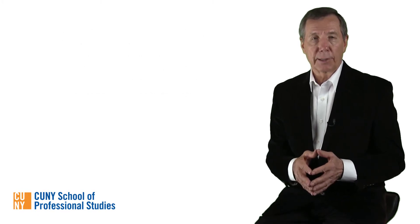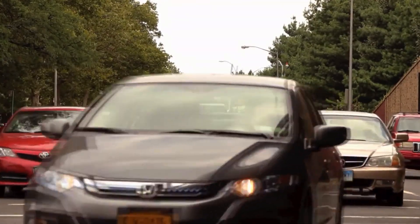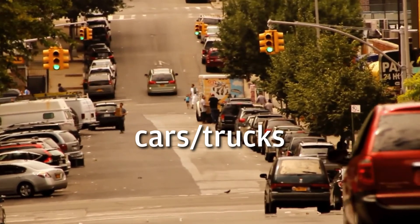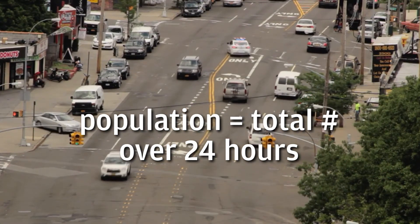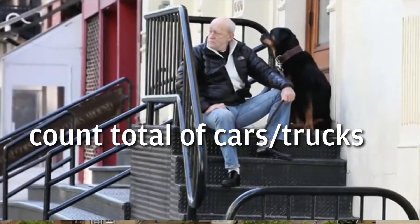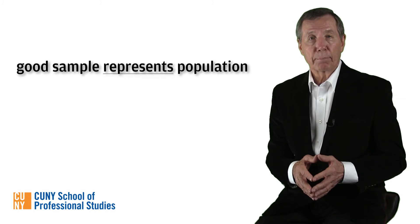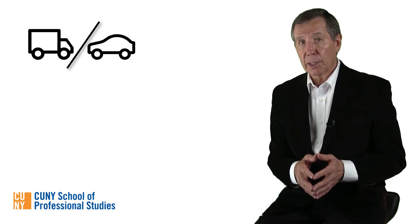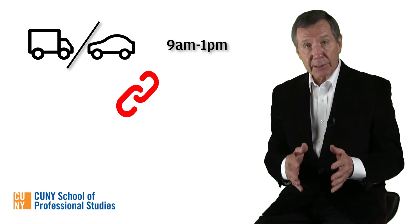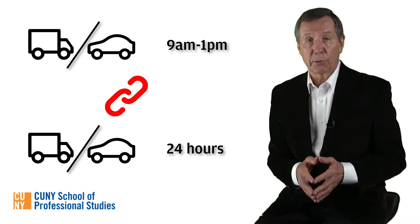Here's an example based on our text. If I were determining the relative proportion of cars to trucks that drive down my block on a given day, the population would be the total number of cars and trucks that drive down the street over 24 hours. And if I were to sit on my stoop from 9 a.m. to 1 p.m. and count all the cars and trucks that drove past me, that would be the sample. A good sample is representative of the population — when a sample is representative, the characteristics of the sample match the characteristics of the population at large. So my method of sampling would be good as long as the proportion of trucks to cars from 9 a.m. to 1 p.m. matched the proportion for the entire 24 hours.